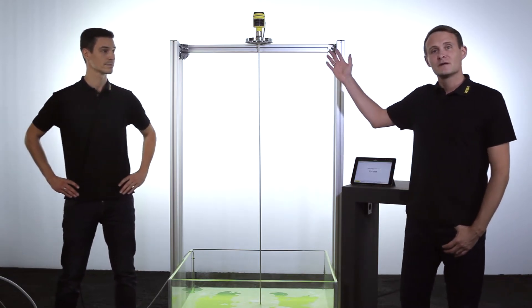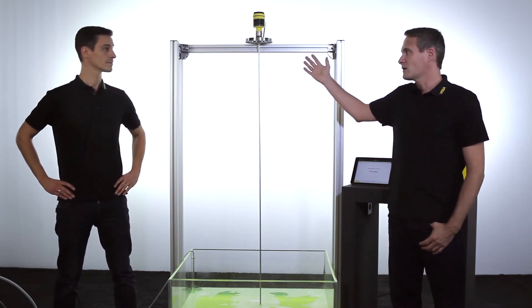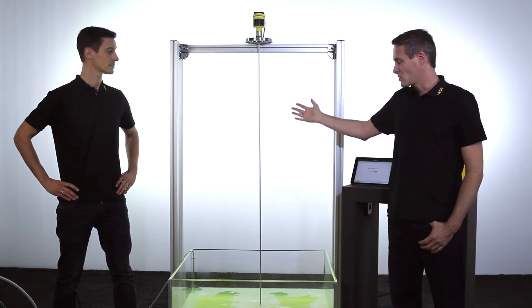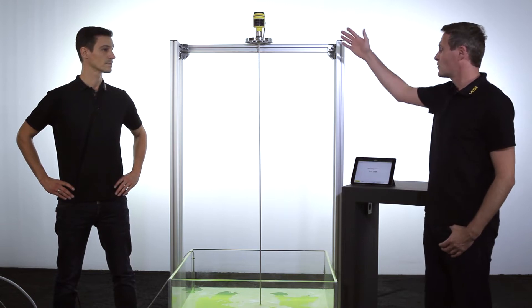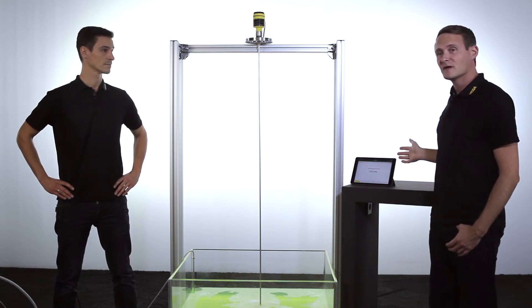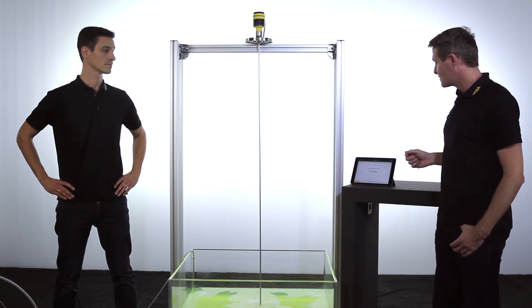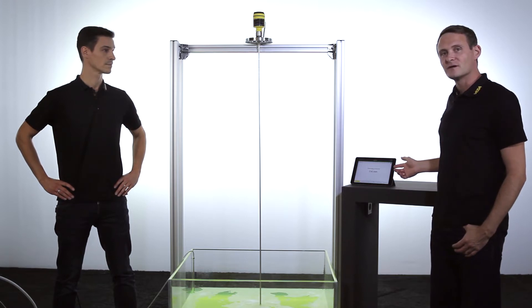In this setup here you see a VegaFlex 81 with a rod probe which measures the level in this tank. We are connected via Bluetooth with this iPad and see the filling height at the moment is 114 millimeters.